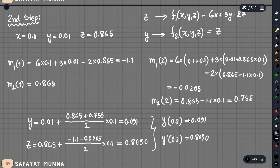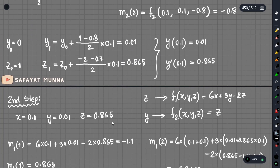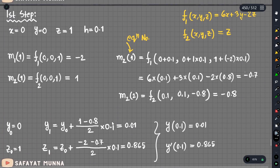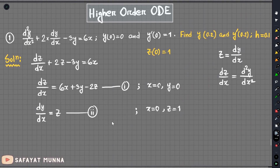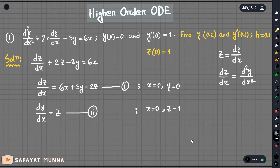So the final results: y at 0.2 equals 0.091 and y prime (z) at 0.2 equals 0.809. This completes the example. We solved this higher-order ODE as a system of first-order linear differential equations using Heun's method, and we will use the same method for similar higher-order ODE problems.